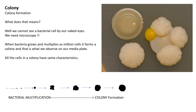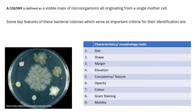All the cells in a colony have the same characteristics. Starting from a single bacterial cell, when nutrients, optimum pH, temperature, and water are provided, it starts growing and multiplying, eventually forming a big colony observable on the plate. A colony is defined as a visible mass of microorganisms all originating from a single mother cell.